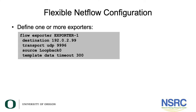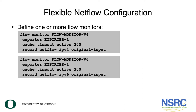Let's have a look at how Flexible NetFlow is configured. We define one or more exporters — 'flow exporter 1' as the slide shows — specifying the destination address, the transport, and the destination port. The source is loopback 0, and then the data timeout for the template is set to 300 seconds.